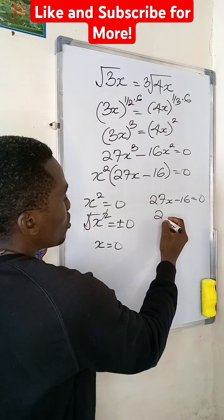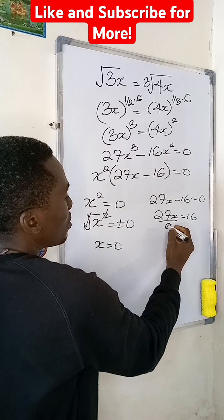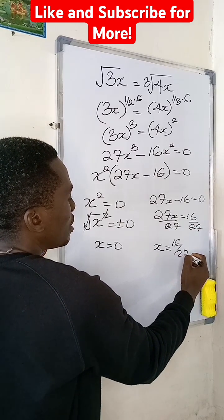And if I do the same here, I'm going to have 27x equal to 16, and then divide here by 27, divide here by 27, and you'll find out that my x would be equal to 16 divided by 27.